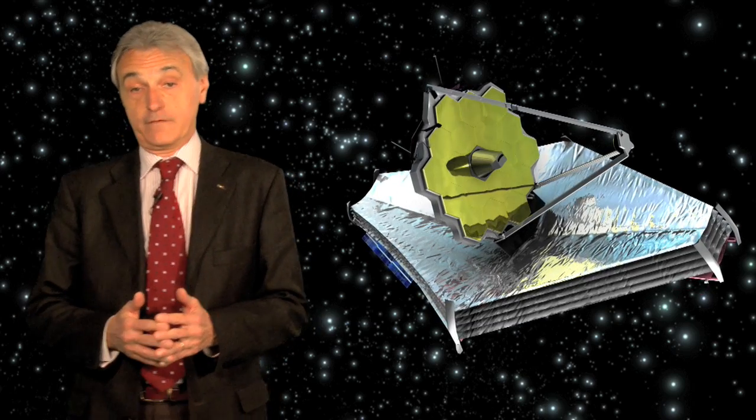Sometimes known as the successor to Hubble, there are many aspects of the James Webb Space Telescope that are very different, such as the wavelengths of light it will detect, its orbit, and its size.